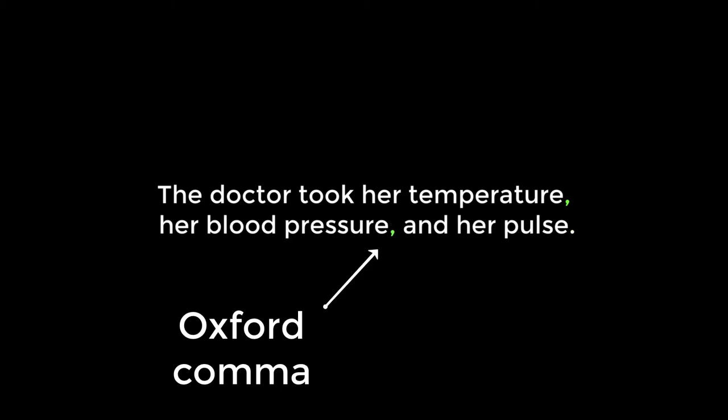One of the most common uses of a comma is to separate three items in a list. For example: the doctor took her temperature, her blood pressure, and her pulse. There is some debate over whether a comma is required before the AND — this is what's called the Oxford comma. You can ask your instructor whether they have a preference.